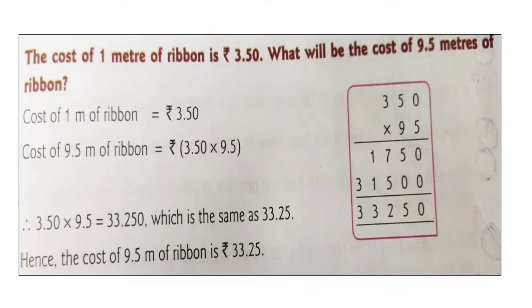Look at the statement. Cost of one meter of ribbon equals rupees 3.50. Cost of 9.5 meters of ribbon: rupees 3.50 multiply 9.5.